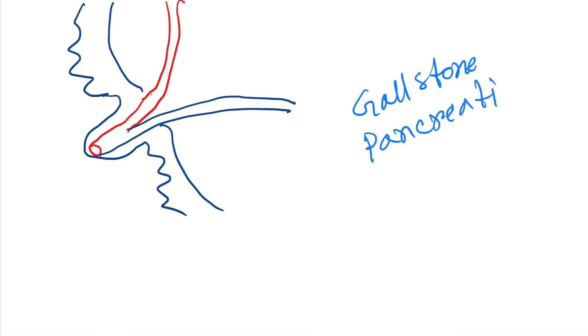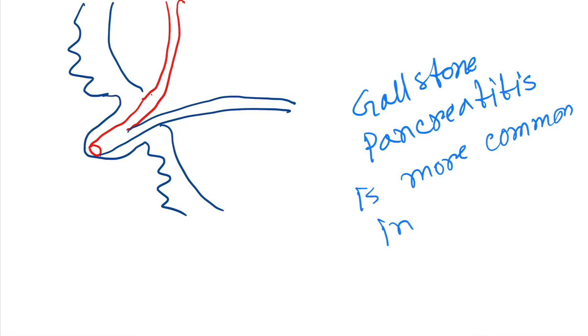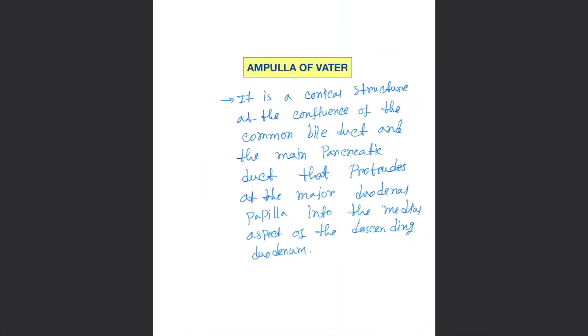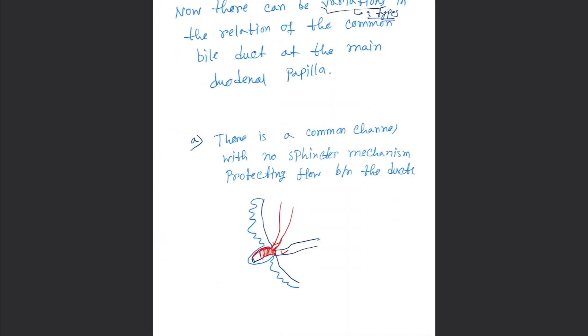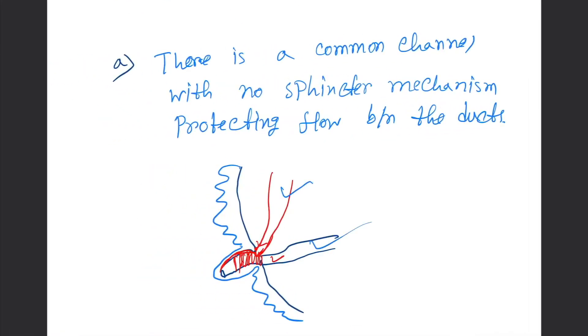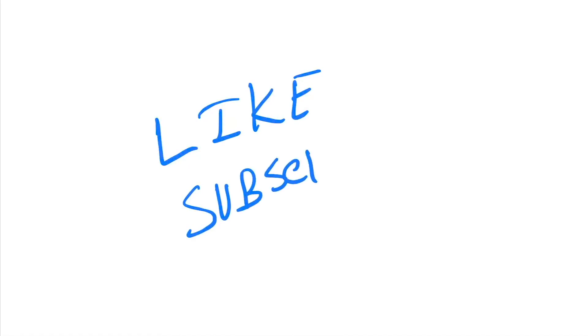There is a theory that gallstone pancreatitis is more common in Type A and Type B variations. That covers the Ampulla of Vater and the variations of the opening of the pancreatic duct and common bile duct. If you like this video, please hit the like button and subscribe to my channel.